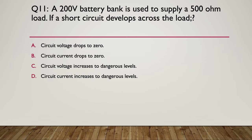Question 11, a 200 volt battery bank is used to supply a 500 ohm load. If a short circuit develops across the load then A, the circuit voltage drops to zero. B, the circuit current drops to zero. C, the circuit voltage increases to dangerous levels. D, the circuit current increases to dangerous levels. So pause here and have a think. Here's your hint, draw the circuit then draw in the fault. So if you put a short circuit across any kind of battery the circuit current will increase to very dangerous levels very quickly, normally making the conductor so hot that it often melts the conductor.